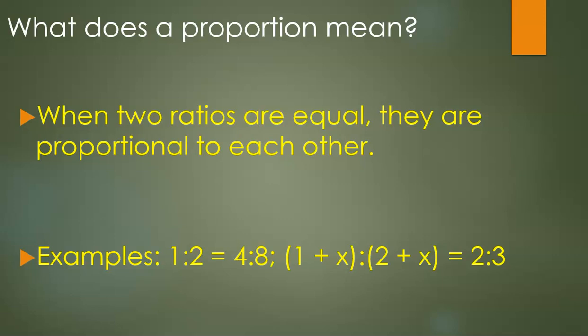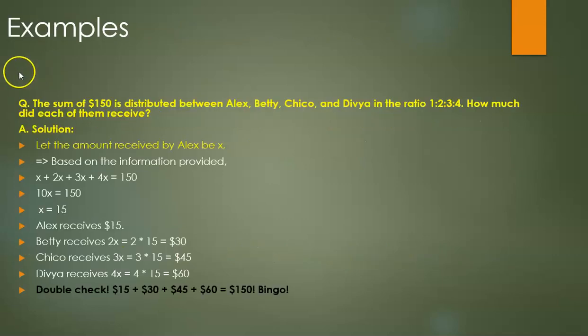Another example of a proportion is (1+x):(2+x) = 2:3. This is better explained with an example, like we did before. So let's look at the examples.